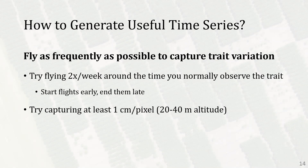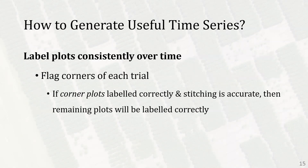It's important that we're labeling plots consistently over time. One piece of advice from the previous seminar: you should leave a little flag marking the corners of each trial or block of plots you want measurements for. If your corner plots are labeled correctly and your stitching is accurate, then most likely the remaining plots in your trial will be labeled correctly. Getting those corners right is critical.